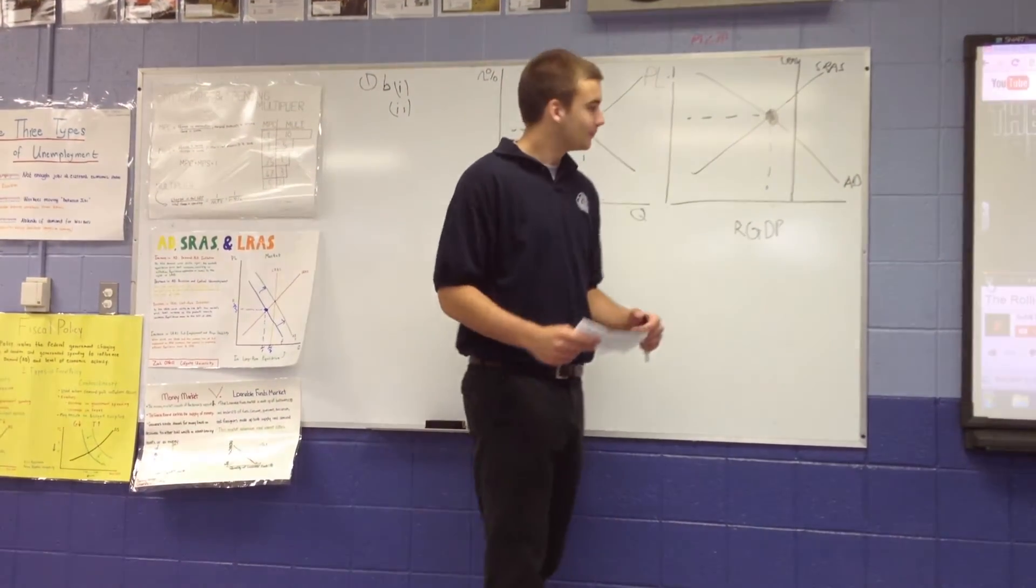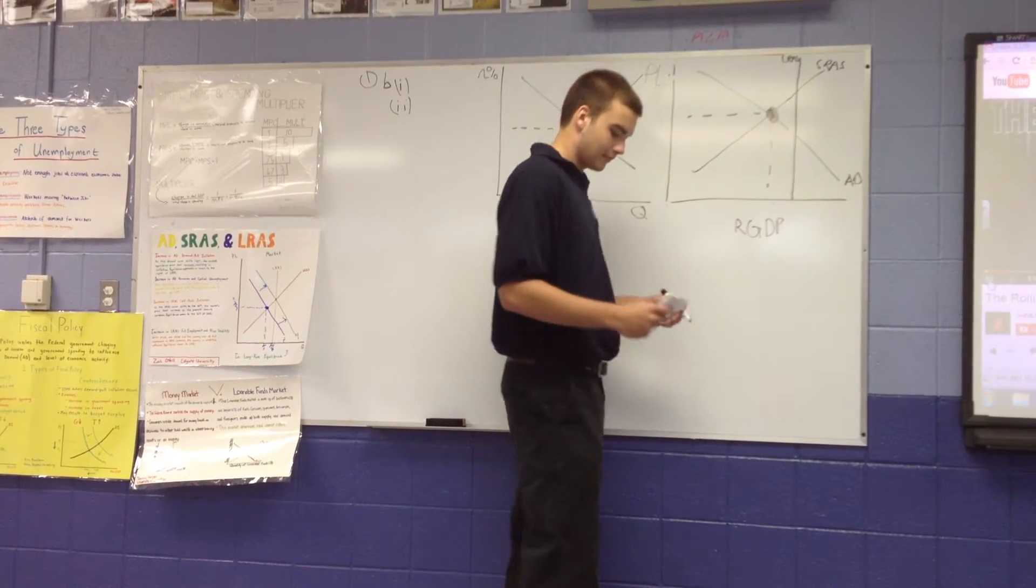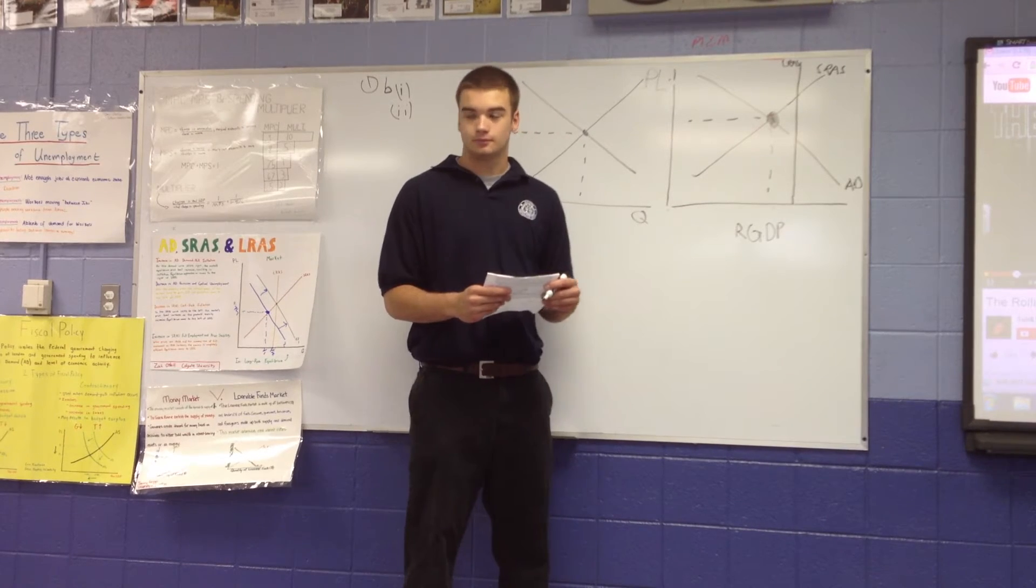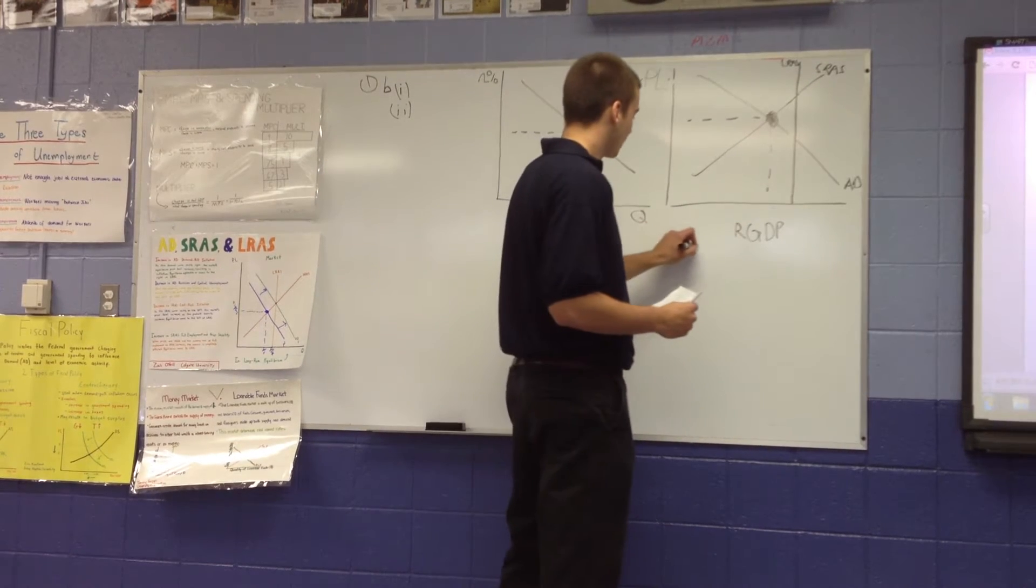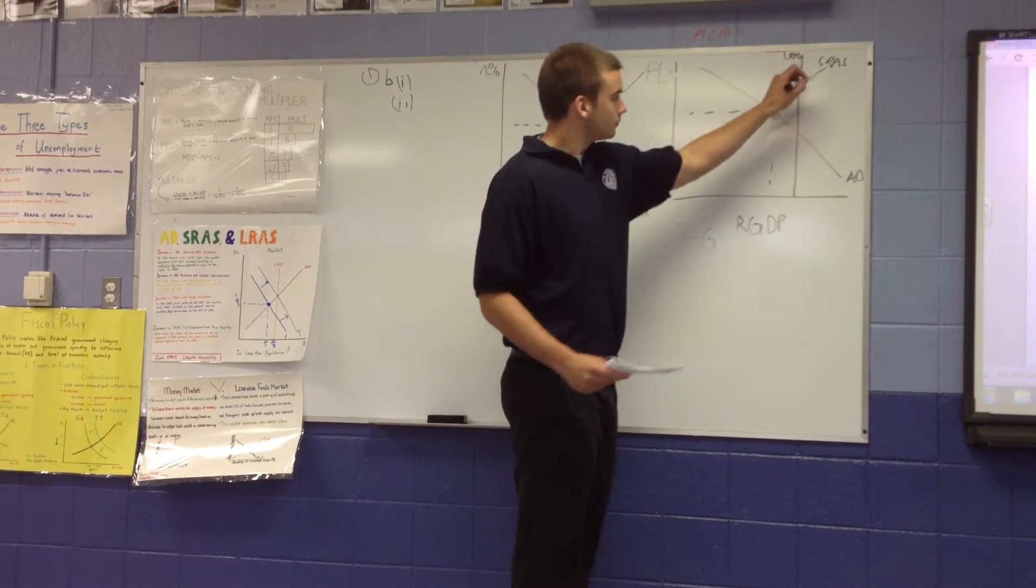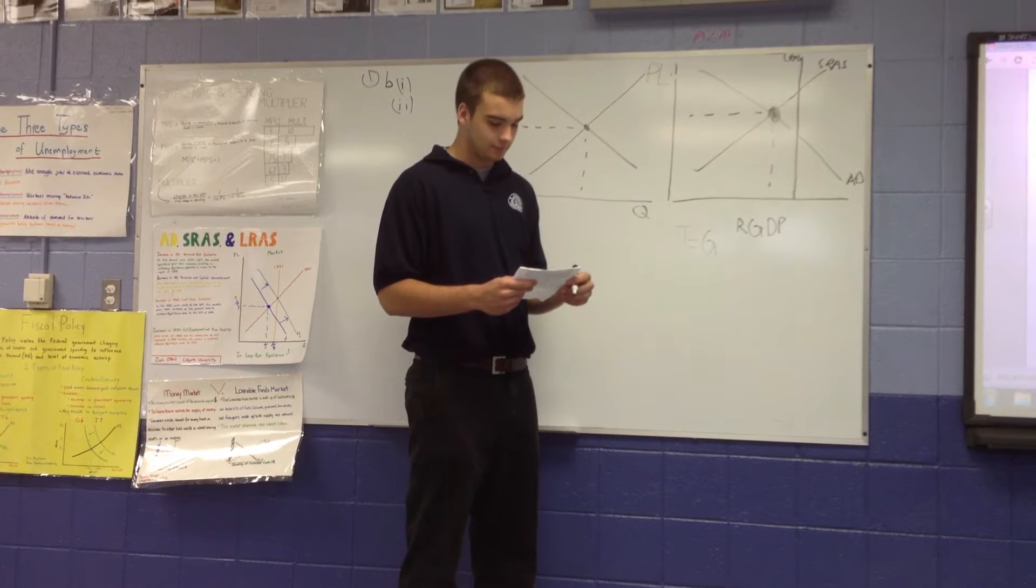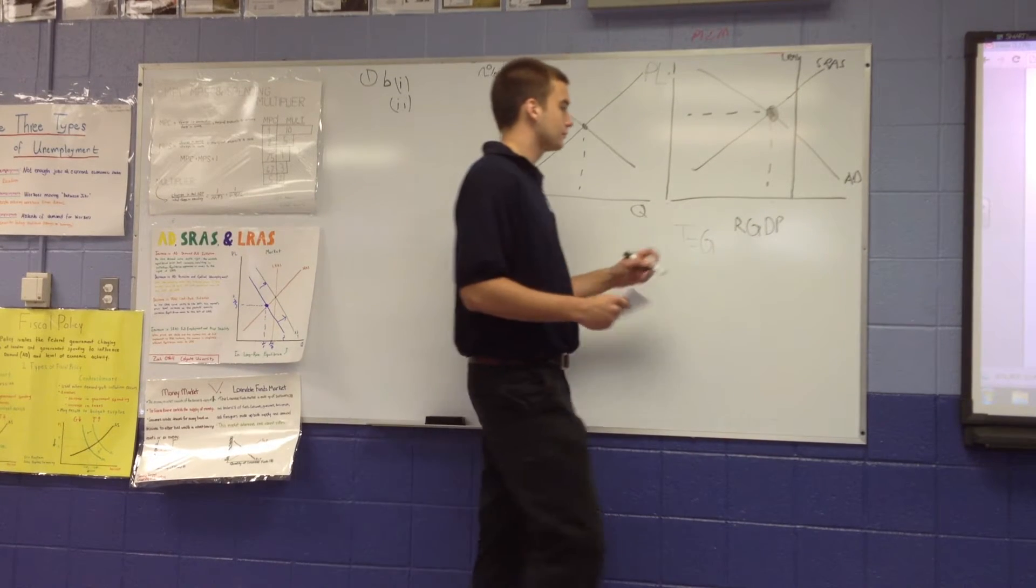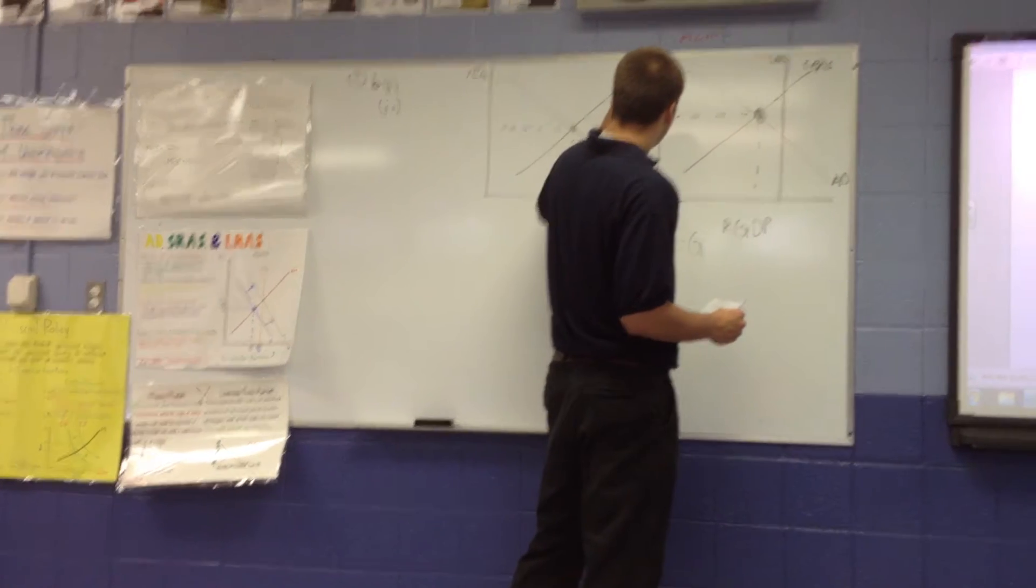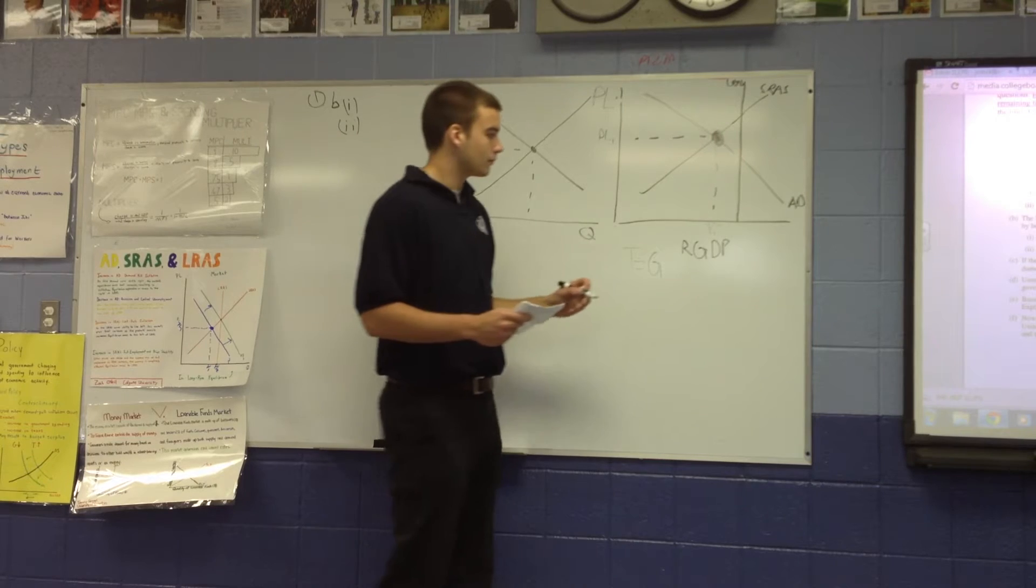Okay, number one. Assume that the United States economy is currently operating below the full employment level of real gross domestic product with a balanced budget. Draw a correctly labeled graph of aggregate demand, short run aggregate supply, and long run aggregate supply, and show each of the following in the United States: Current output and price level, labeled as Y1 and PL1 respectively, and the full employment output, labeled as YF.